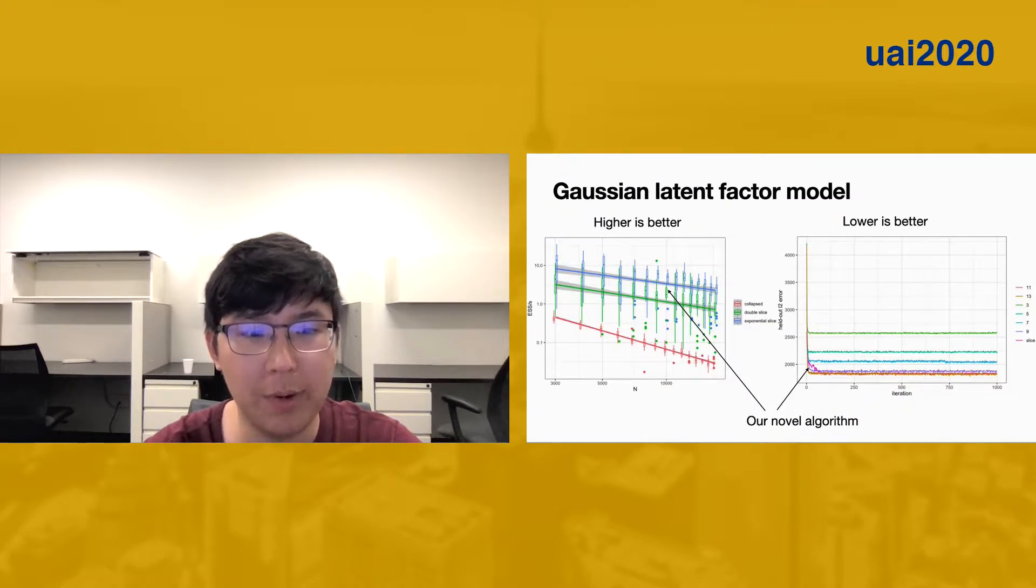Our first experiment is based on synthetic data generated from the Gaussian latent factor model. We constrained ourselves to the identifiable models with increasing dimensions as the number of observations increases. Our method generates an effective sample size per second that scales better than the accelerated collapsed sampler by Doshi-Velez et al., as you can see on the left.